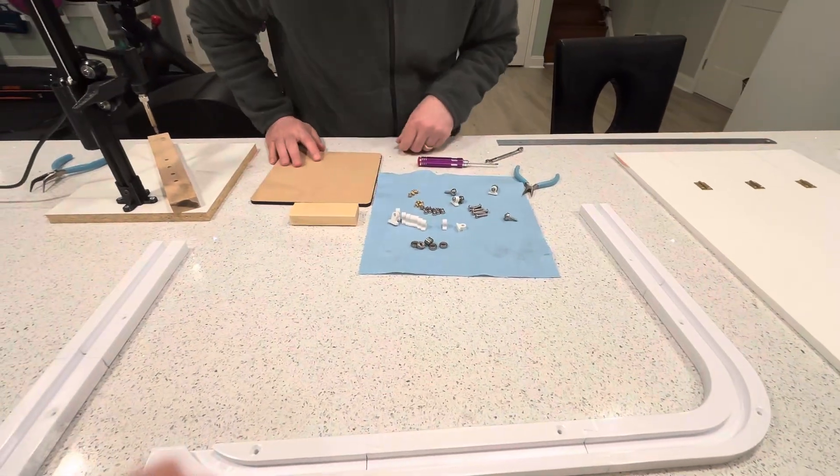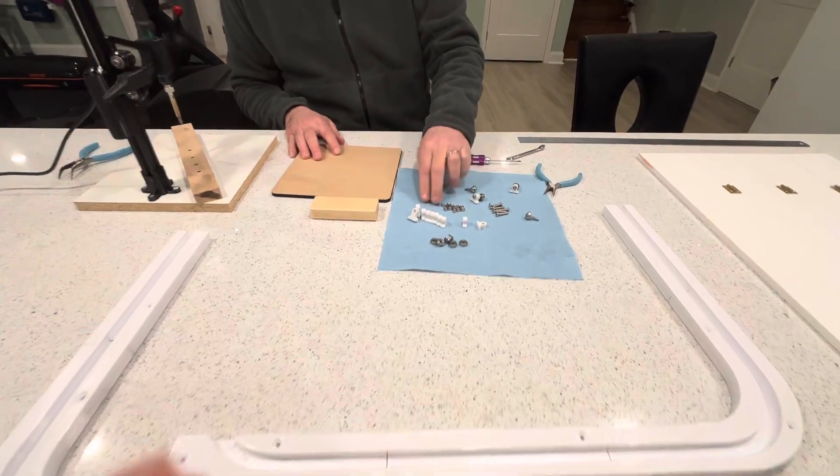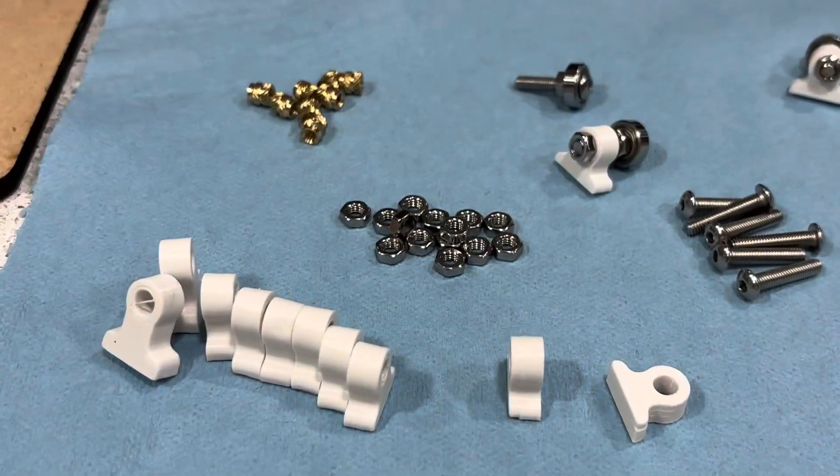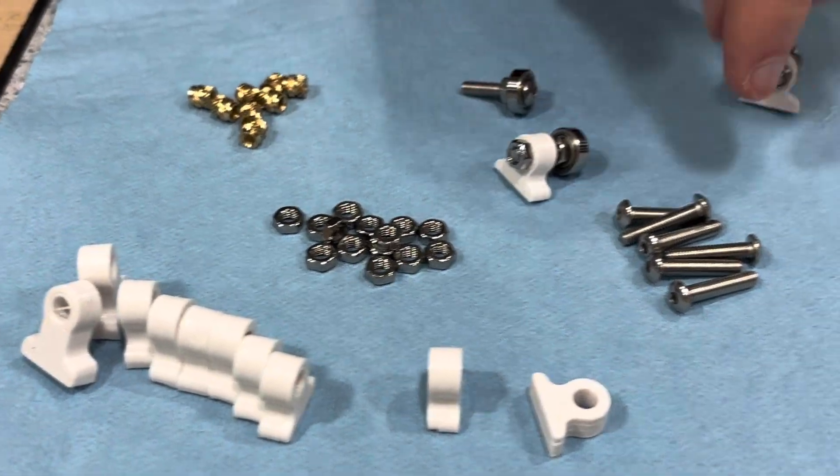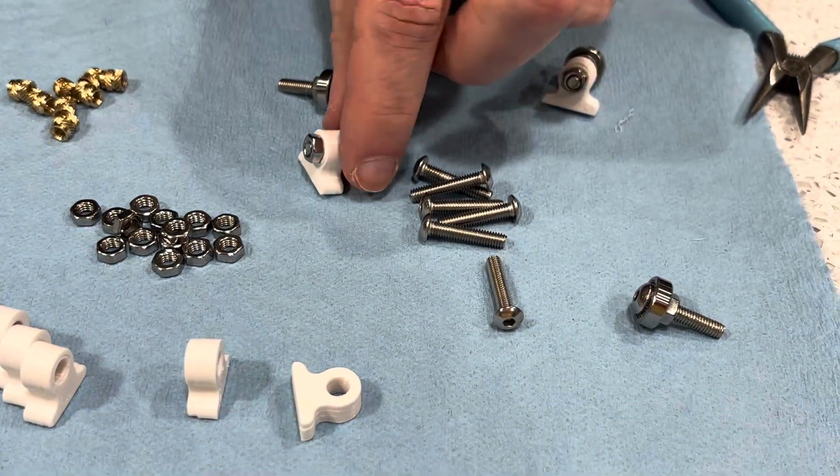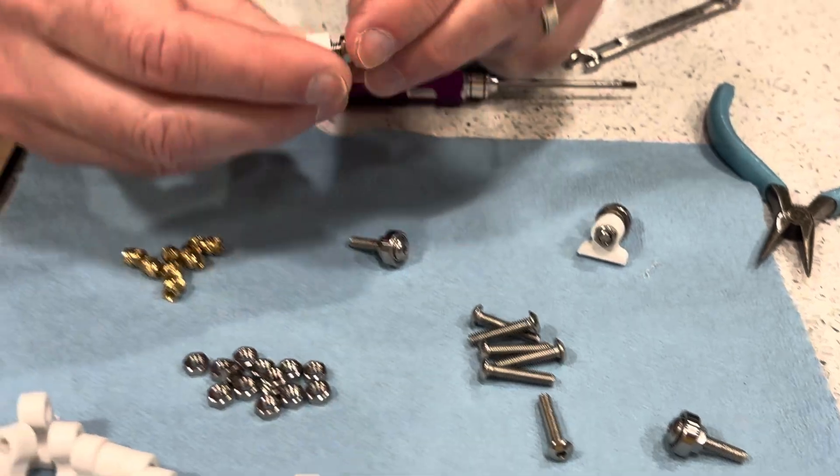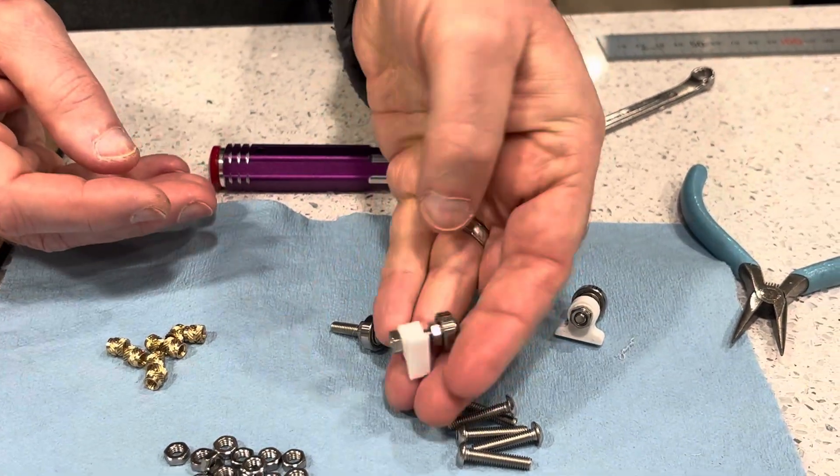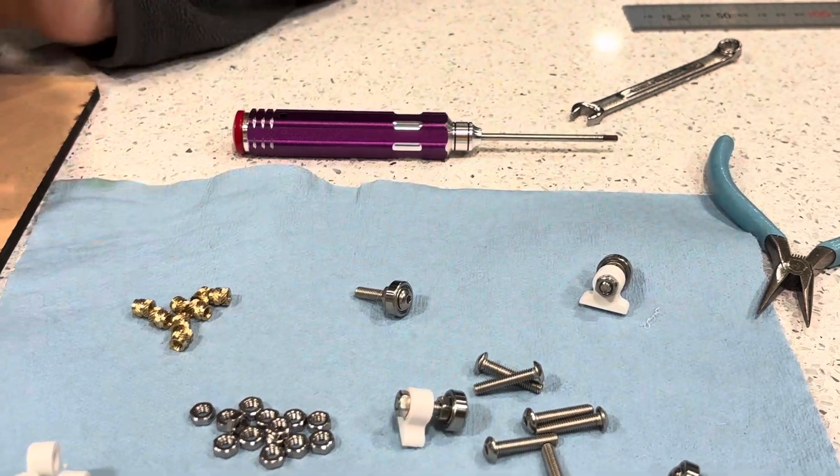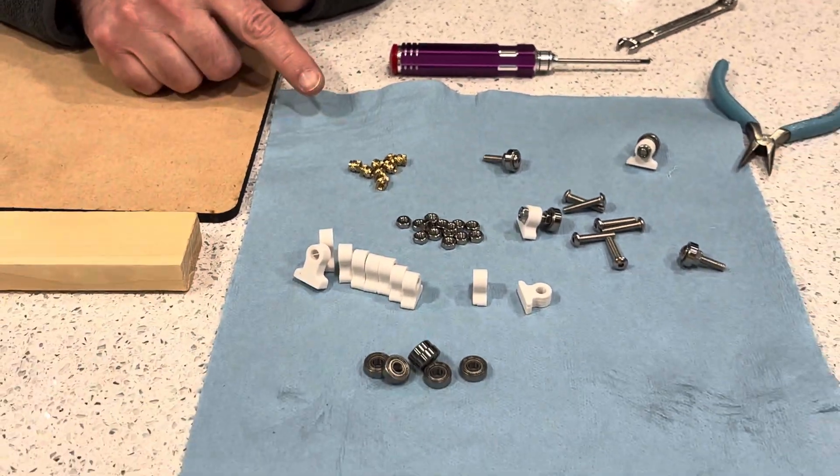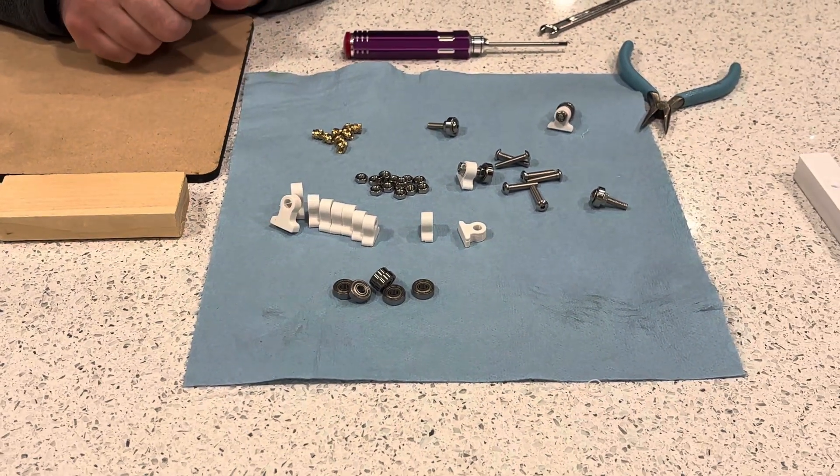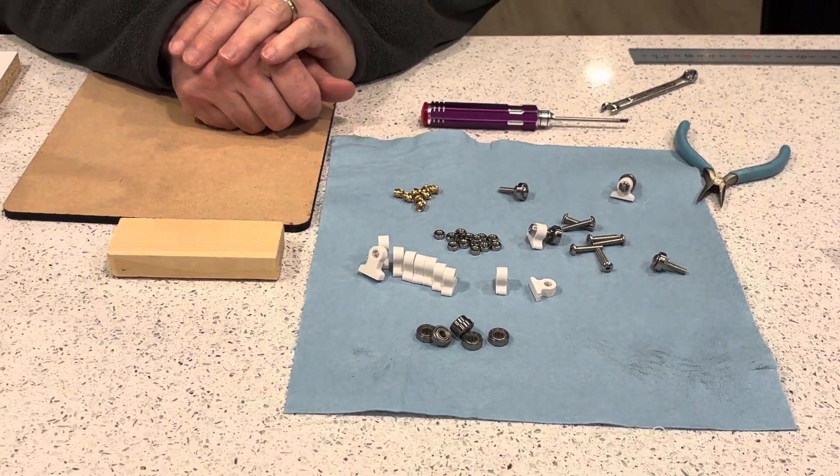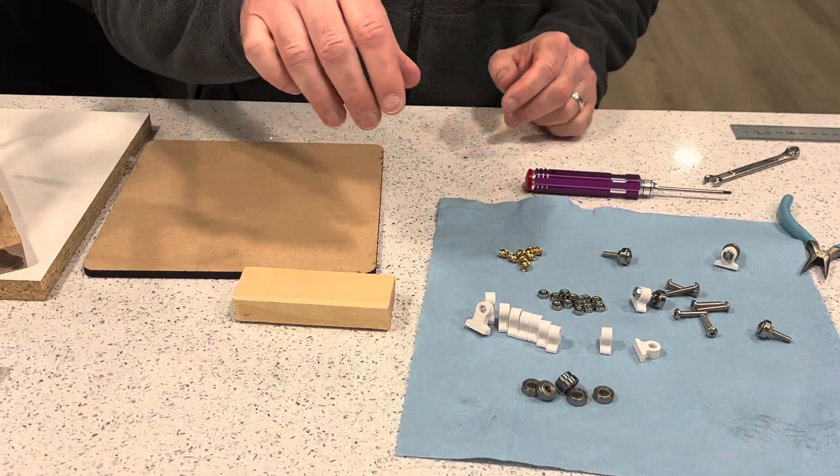So what we're going to do is I have these heat set inserts that will go into the 3D printed parts. And then the screw that's acting as the axle goes through that. And actually I have one assembled here. I know my hand's getting in the way. Anyway, so we'll insert those heat set inserts into the plastic parts and then assemble one or two of these wheels and show you how that goes. All right, well, let's go.